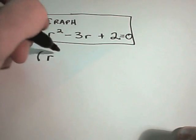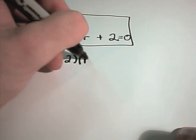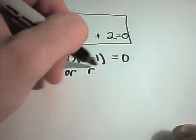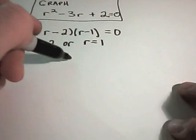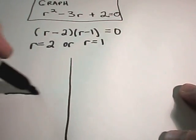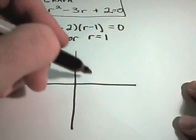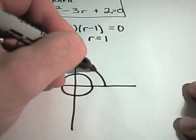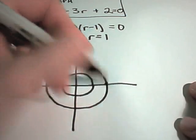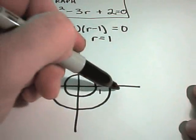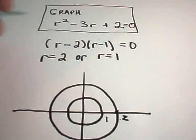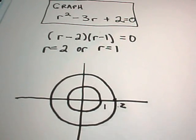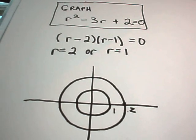So we want to graph r squared minus 3r plus 2 equals zero. So we can actually just factor this as r minus 2, r minus 1 equals zero. And that gives us r equals 2 or r equals 1 solving these factored parts. So now all we have to do is graph the circle r equals 1. That's just a circle of radius 1. And graph r equals 2. That would just be a circle of radius 2. And that would be the graph of the equation, the polar equation, r squared minus 3r plus 2 equals zero.